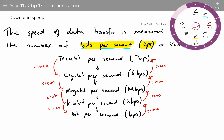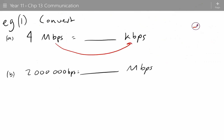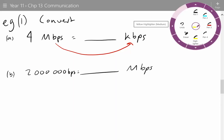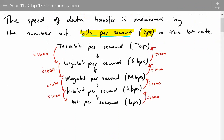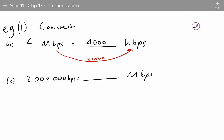First example: convert 4 megabits per second to kilobits per second. We're going from megabits per second down to kilobits per second, so we need to multiply by one thousand. Four times one thousand — we don't even need a calculator. That is 4,000 kilobits per second. So a download speed of 4 megabits per second is the same as 4,000 kilobits per second.